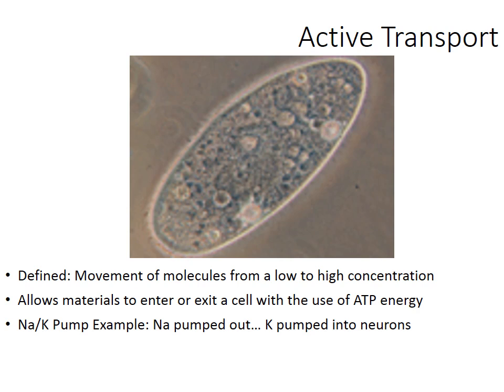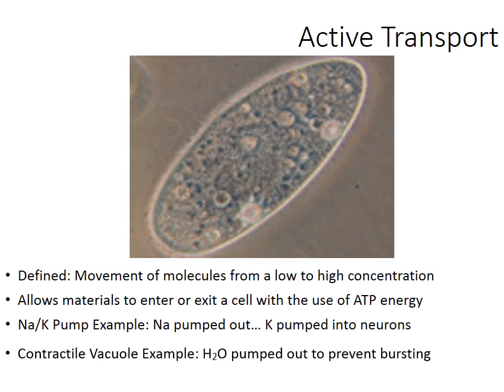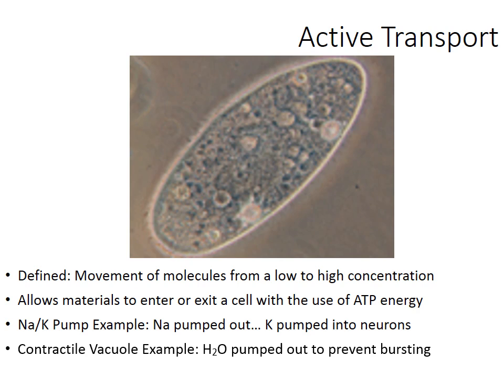Another great example is the contractile vacuole that some cells have. You might recognize this is a cell called a paramecium — a freshwater creature in the kingdom Protista, microscopic, requiring a microscope to see. I've highlighted the contractile vacuole. What this structure does is prevent the cell from bursting by taking on too much water — it squeezes out extra amounts of water. It's a pump, a water pump.